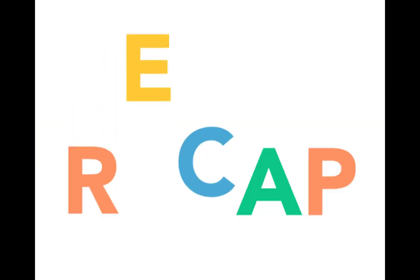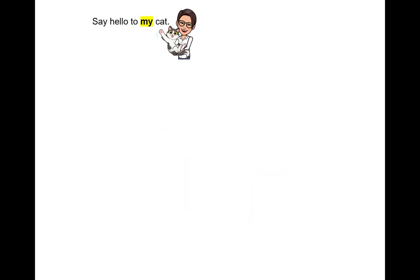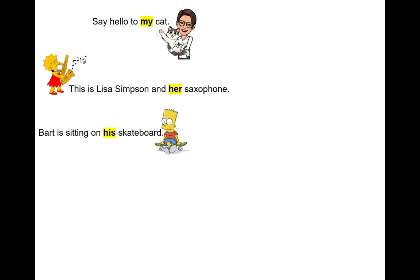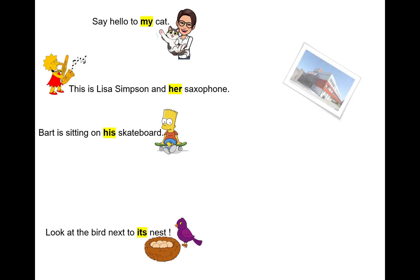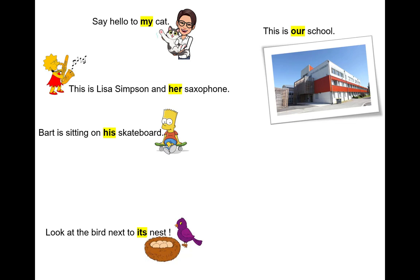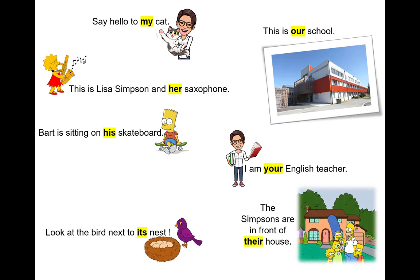Let's recap. Say hello to my cat. This is Lisa Simpson and her saxophone. Bart is sitting on his skateboard. Look at the bird next to its nest. This is our school. I am your English teacher. The Simpsons are in front of their house.